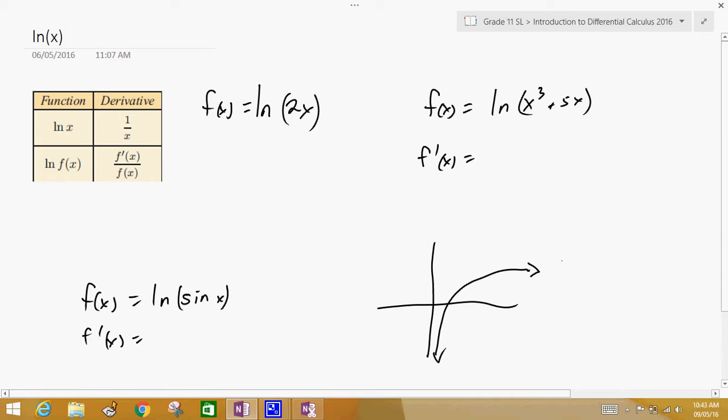If we were trying to find the slope of this function, we could see up here the slope is approaching zero, and as we get closer to x = 0, the function seems to be approaching infinity.